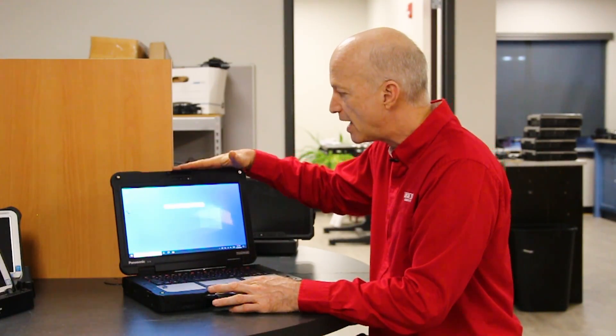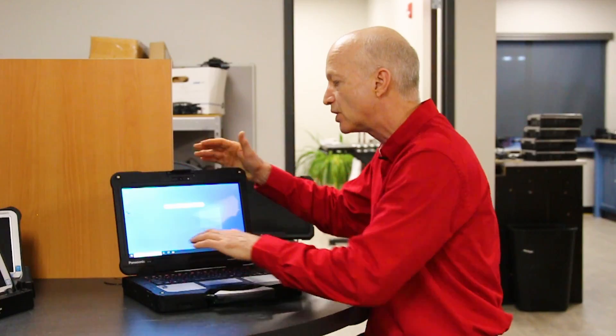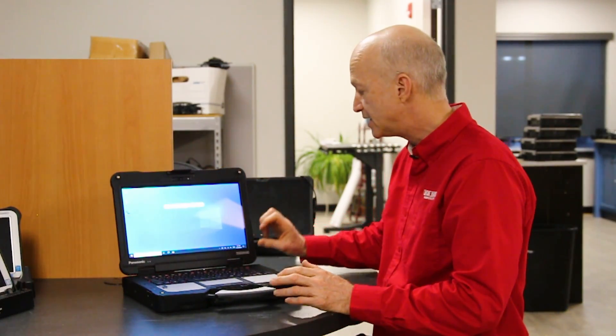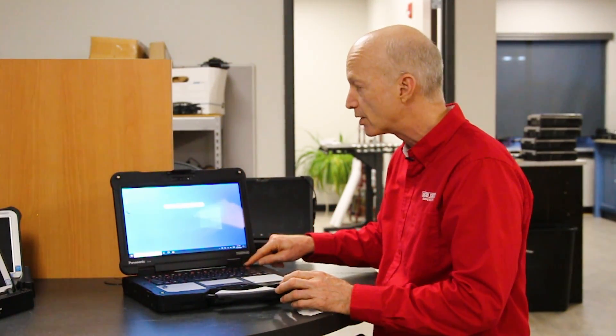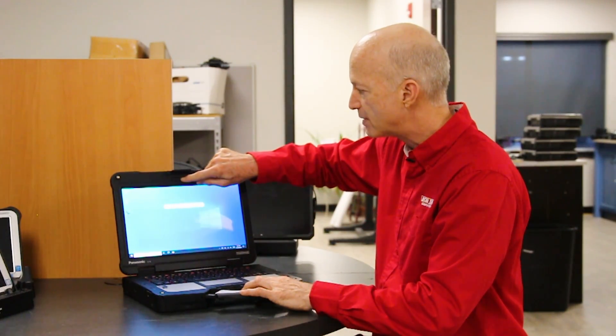So this is going to be a heavier screen than your CF-31. You need heavy duty hinges to hold this screen up. You don't want to have that problem, so they did do some nice design work on the screen hinges. Of course you have your webcam up here with the little privacy shutter.